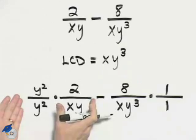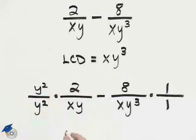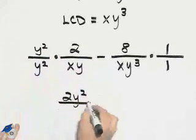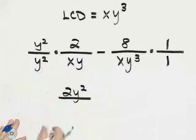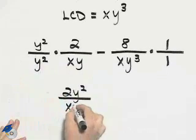Simplifying each of these pieces gives y squared times 2, or 2y squared. Y squared times xy is, in fact, xy cubed.